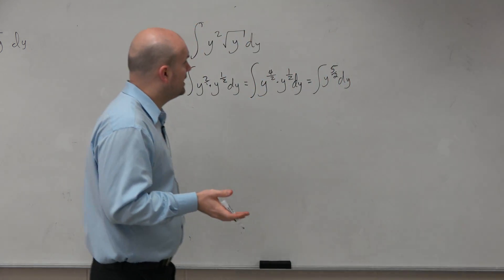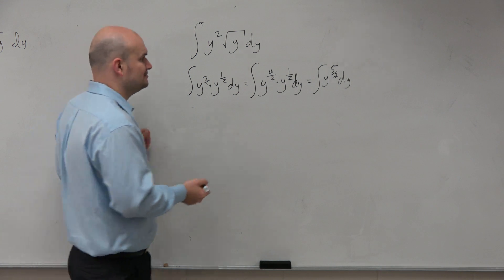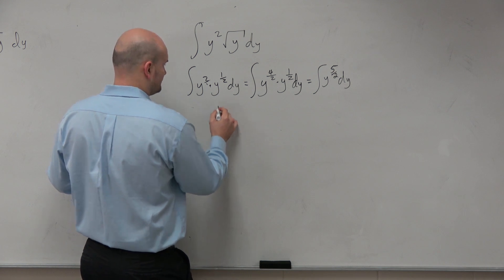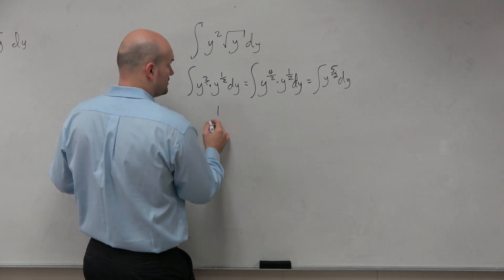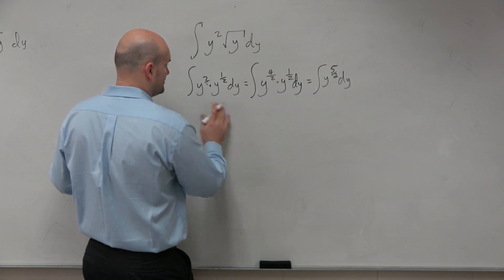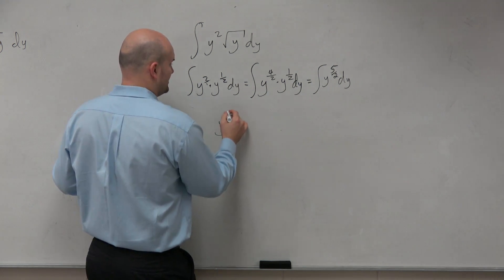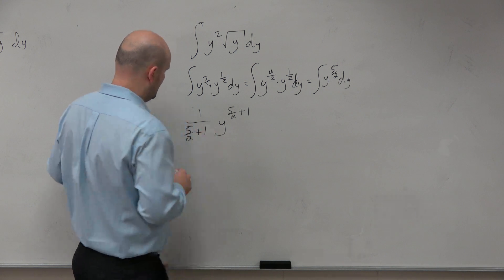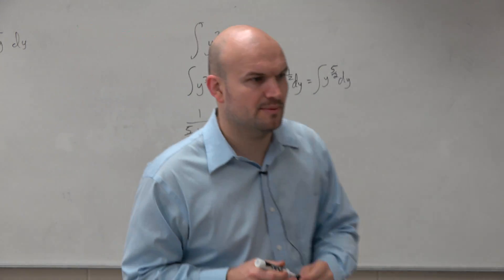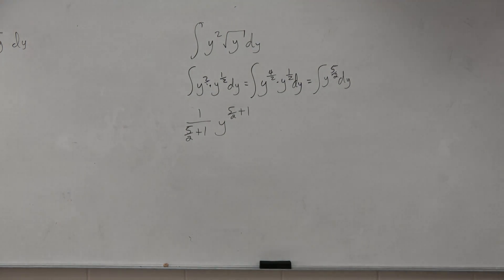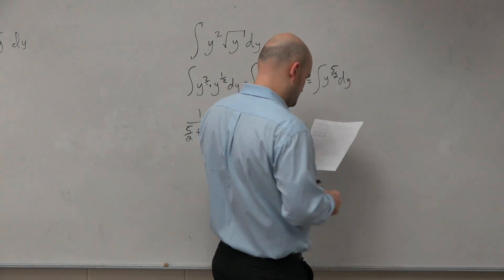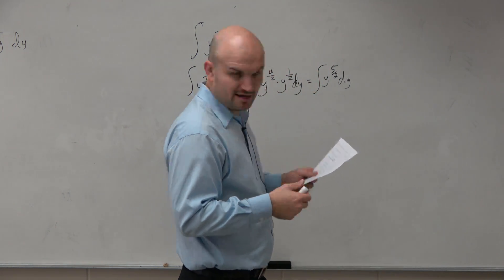So now, when we go ahead and integrate, remember, we're going to add 1 and then divide by that. So therefore, we're going to have y to the 5 halves plus 1, and then 1 divided by 5 halves plus 1. Did I forget to add the 1? Did I add 5 halves? Oh, I did that wrong. My apologies.